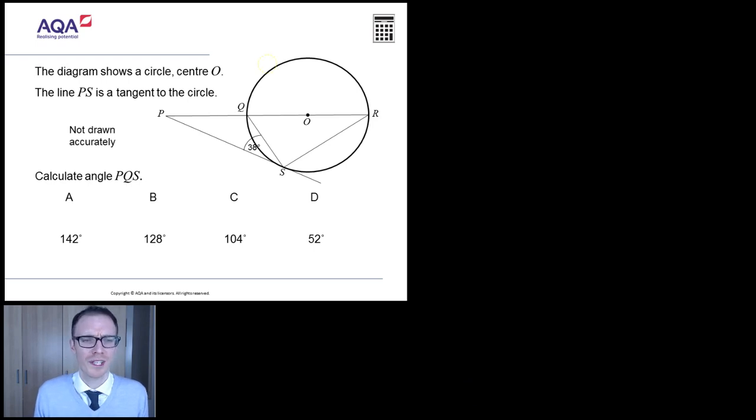Every week I treat you to a lovely GCSE Maths question that's hopefully going to help you prepare for the demands of your GCSE Maths exam. Now this week we've got an old classic. We've got circles, we've got angles. What's it got to be? Got to be circle theorems. This has been provided by AQA, but it's flipping hard, let me tell you now.